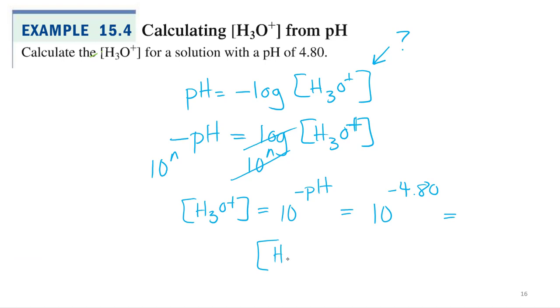So what does my hydronium ion concentration equal for this example? 1.6, 1.6 times 10 to the what? Negative fifth. Negative fifth, negative five.